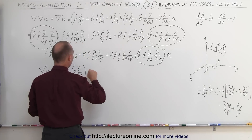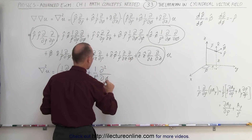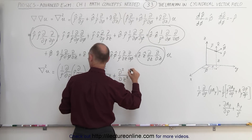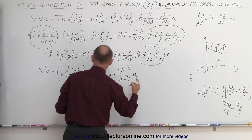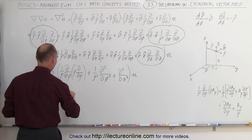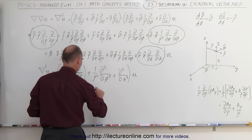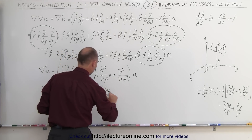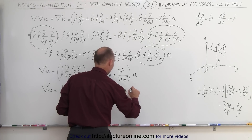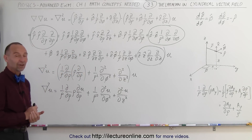The next surviving term simply becomes plus one over ρ squared, and we can take the second derivative with respect to φ directly. Then plus the second derivative with respect to z squared. Bringing it all together, the final form of the Laplacian operating on scalar u is: one over ρ times ∂/∂ρ of (ρ ∂u/∂ρ), plus one over ρ squared times ∂²u/∂φ², plus ∂²u/∂z². That is the final form of the Laplacian in cylindrical coordinates.